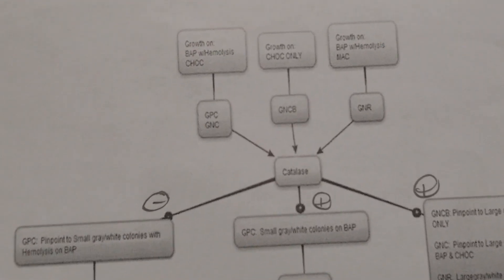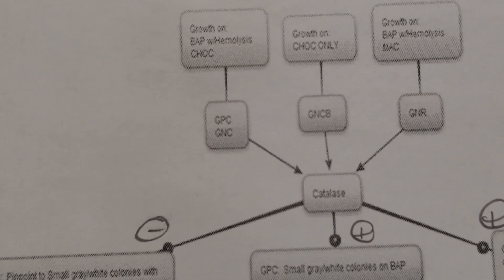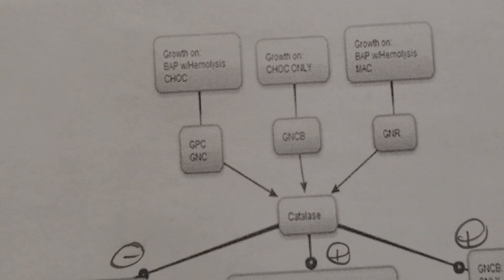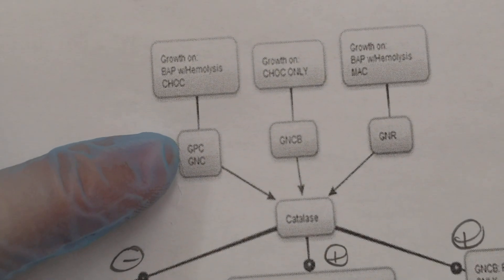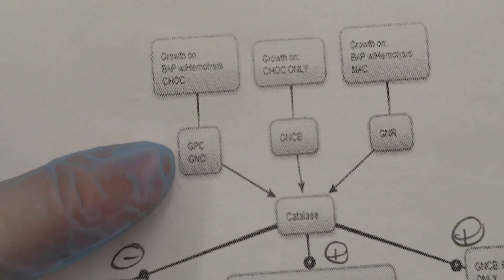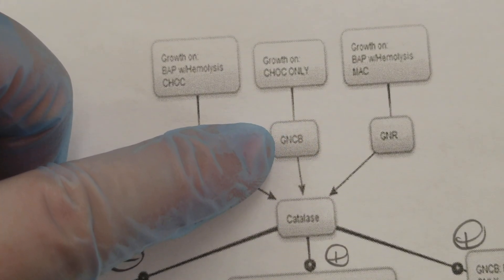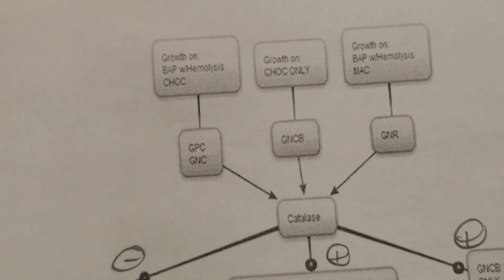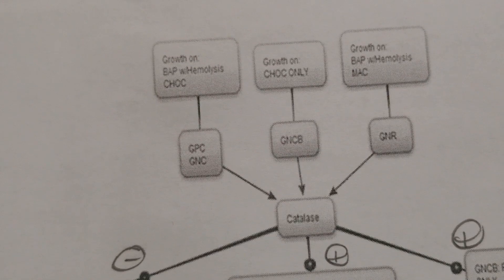The organisms we're looking at are going to be the first two sets of organisms that we use in class. The first grouping has gram positive and gram negative cocci and the gram negative cocobacilli, and we just went through in another video showing you what they look like on triplates.